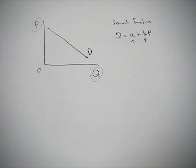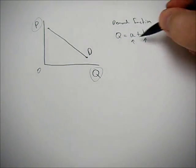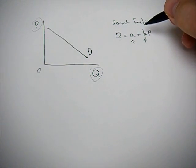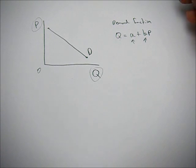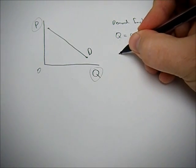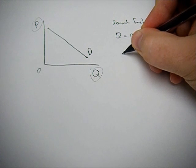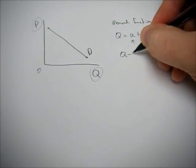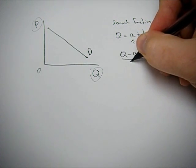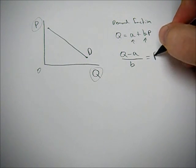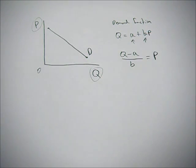But what's tricky about economics is that you can mess with this equation and get an inverse demand function. So if we subtract A from both sides and then divide by B, we get Q minus A divided by B equals P.